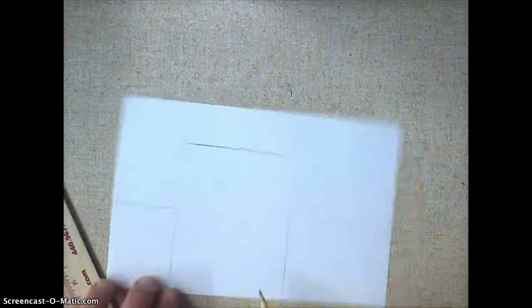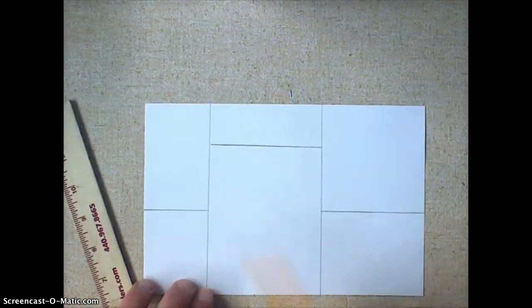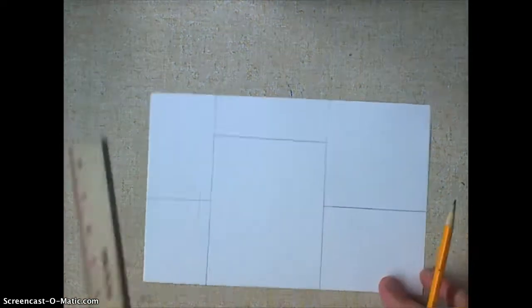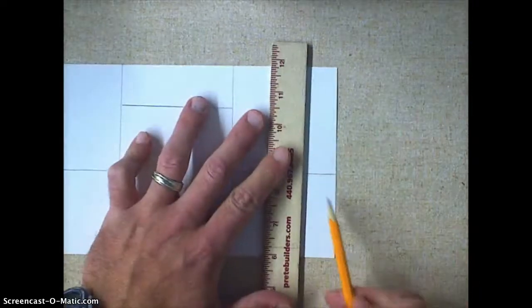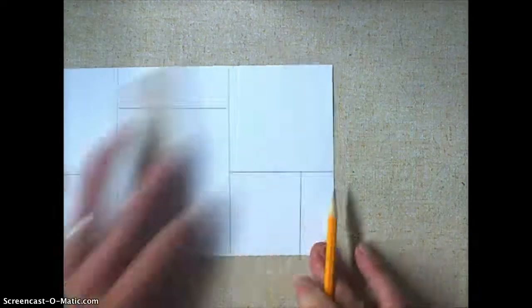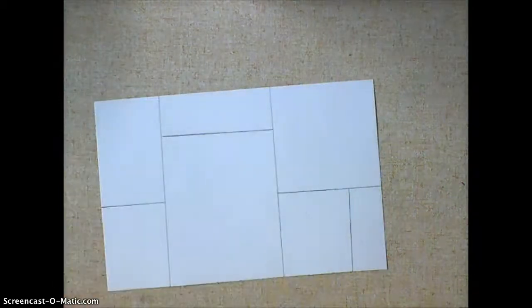So I have three horizontal lines—one, two, three—and I have two vertical. I'm going to make one more vertical right here. Okay, so now I have a bunch of different squares.